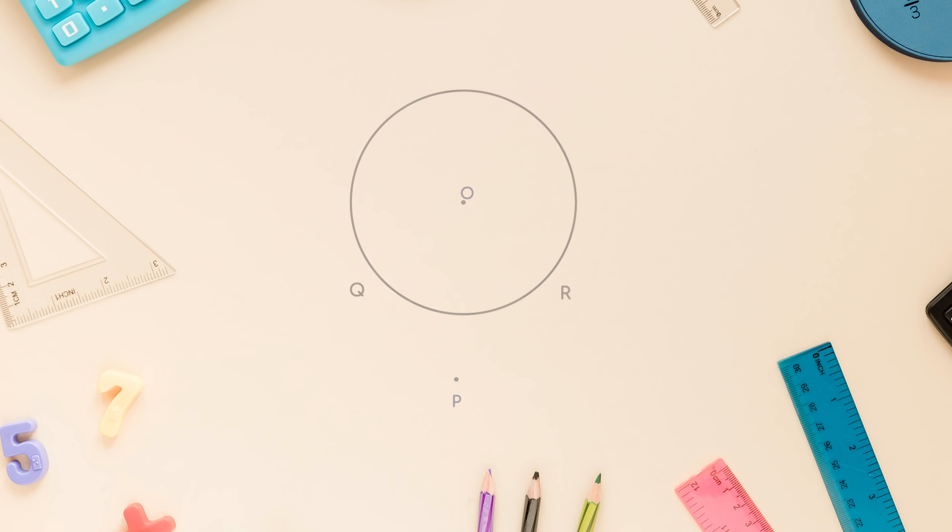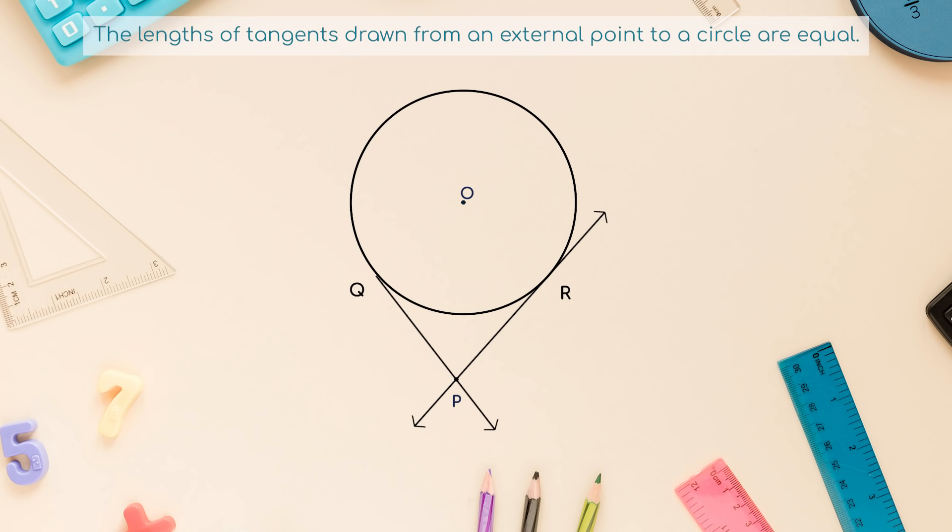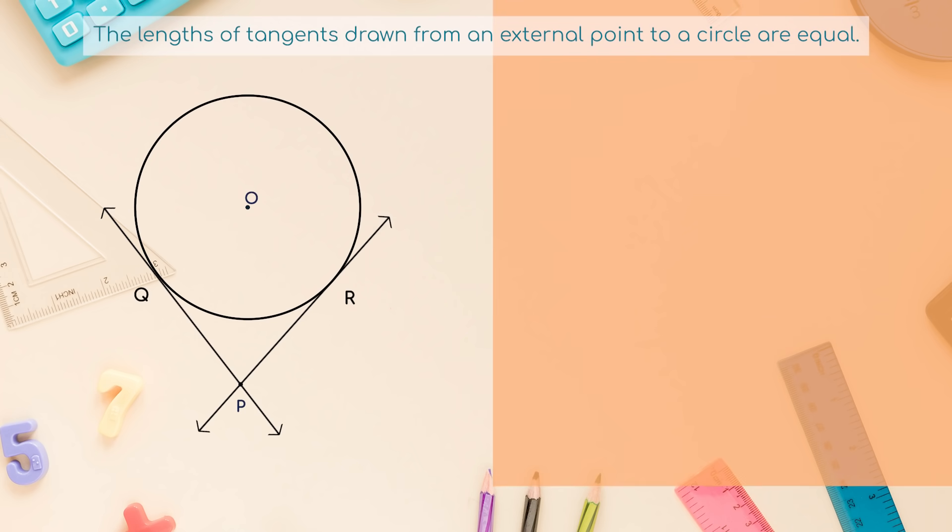Theorem 2: The lengths of tangents drawn from an external point to a circle are equal. Proof: We are given a circle with center O, a point P lying outside the circle and two tangents PQ and PR on the circle from P. We are required to prove that PQ equals PR. For this, we join OP, OQ, and OR.